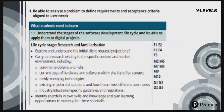This is an example of how the specification is laid out. This shows part of performance outcome one: be able to analyse a problem to define requirements and acceptance criteria aligned to user needs. At the very top, under what students need to learn, you'll see the first knowledge or skill statement for the PO. In this instance, it's PO1.1 — understand the stages of the software development lifecycle and be able to apply them to digital projects. The '1' refers to performance outcome one, and '.1' because this is the first specialist skill within that performance outcome.